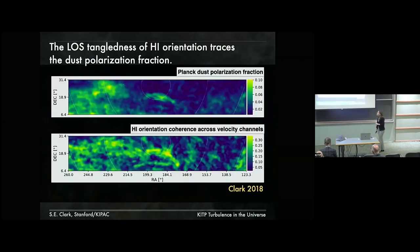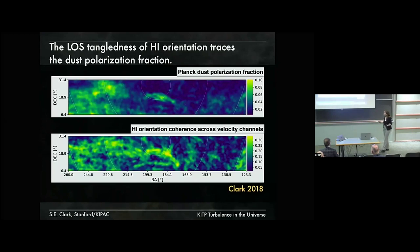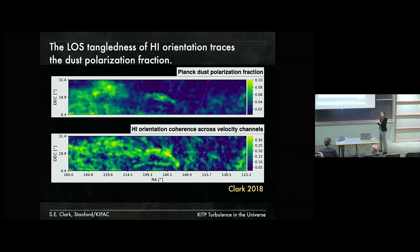With the HI we also have access to line-of-sight information, not directly in distance, but in the form of Doppler-shifted velocity of the HI line — so we measure the HI emission as a function of line-of-sight velocity. It turns out that you can use the orientation of HI structures as a function of that line-of-sight velocity, and the more disordered the HI orientation is along the velocity axis, the more depolarized the thermal dust emission is. So in this three-dimensional position-position-velocity measurement of the gas distribution we have something sensitive to the tangling of the magnetic field structure that we measure in the dust polarization.